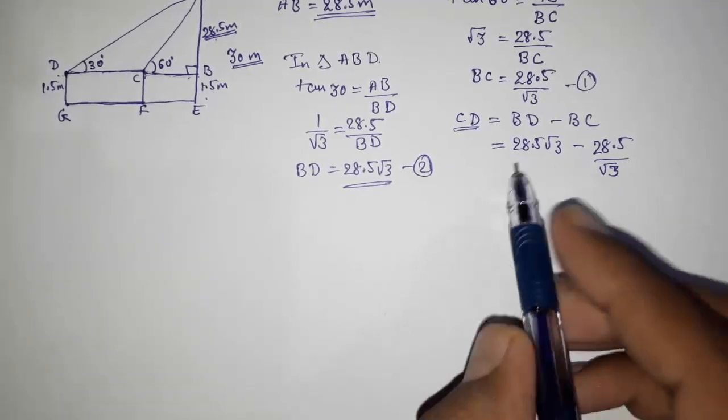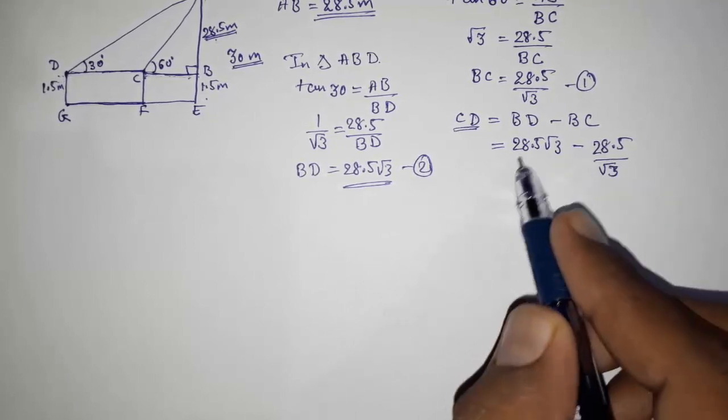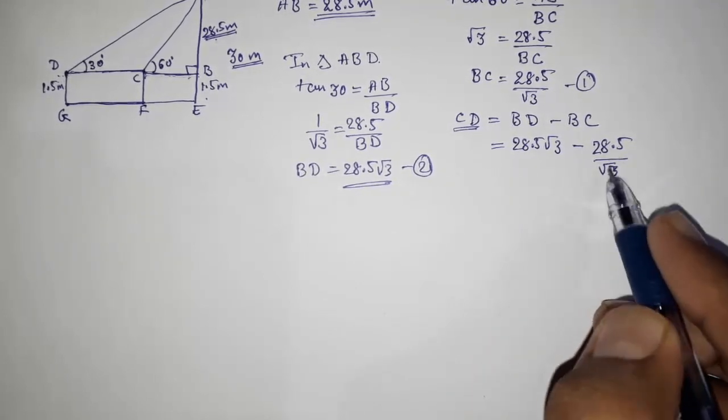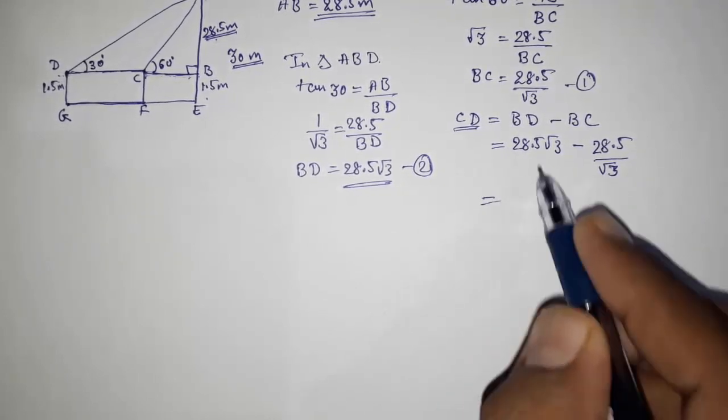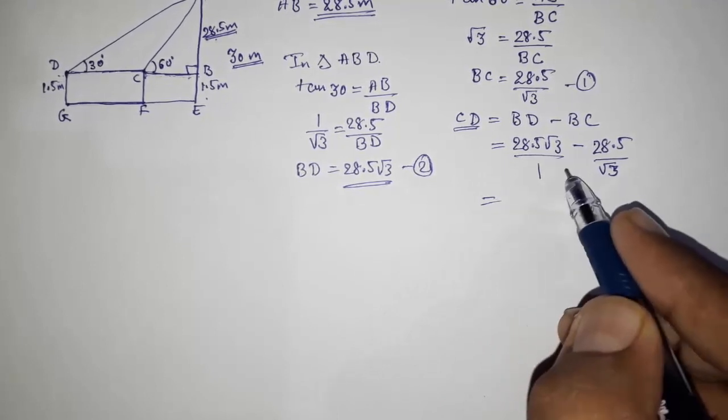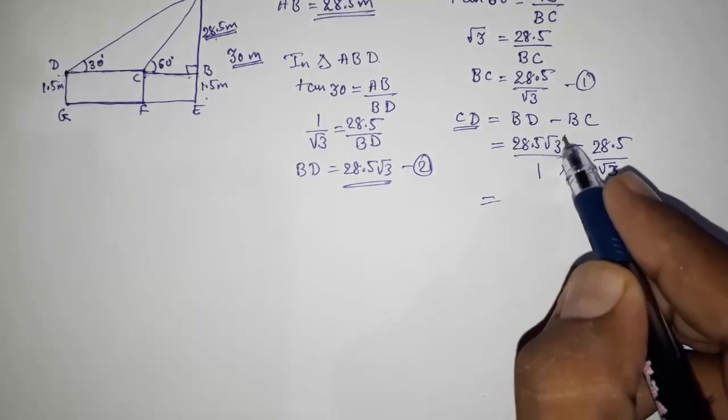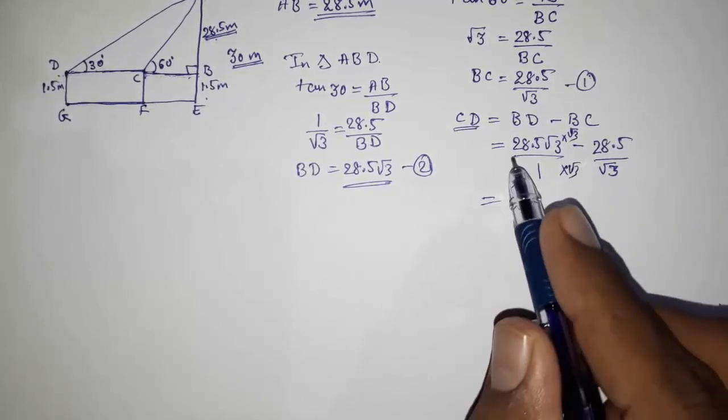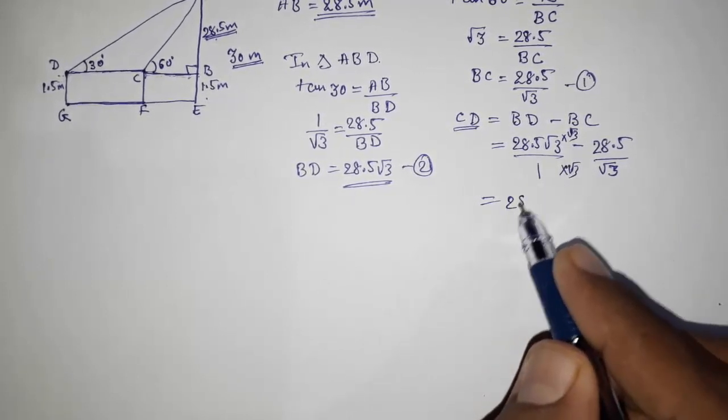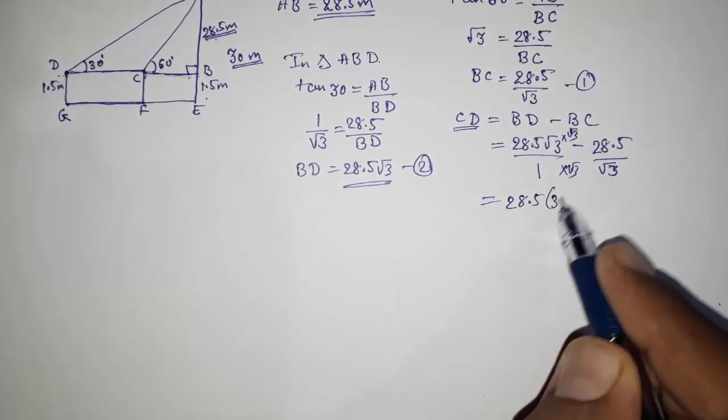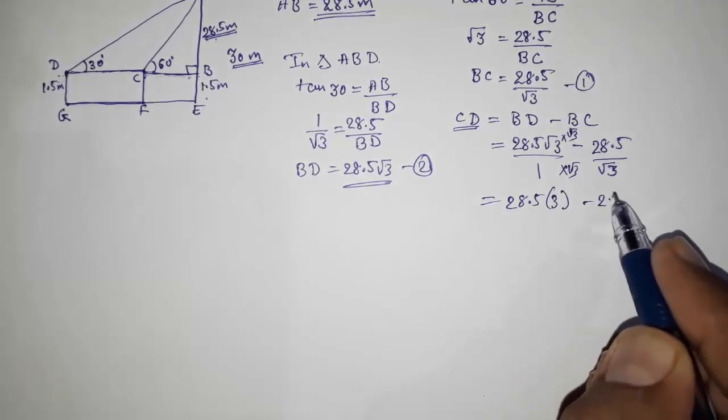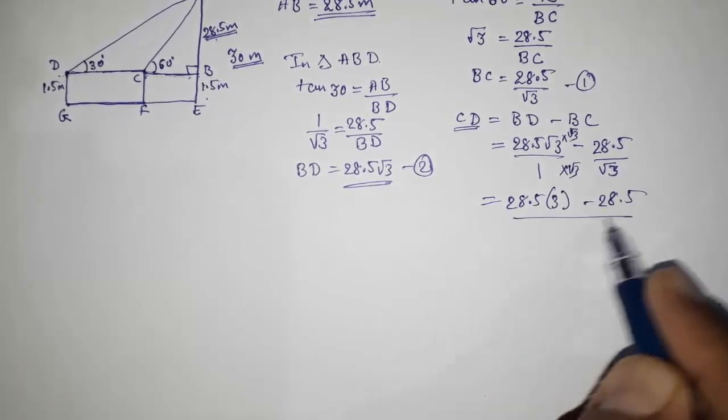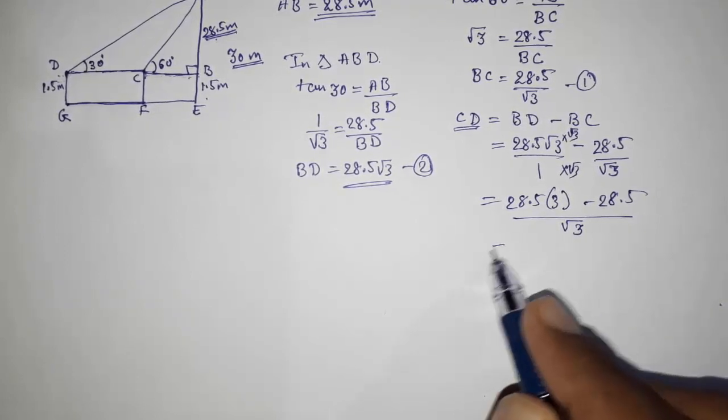So now 28.5 root 3 minus 28.5 by root 3. So what we have to do here? We have to find out the LCM or you can rationalize this, but directly I am going to find out the LCM. Here denominator is 1, so multiply both with root 3.